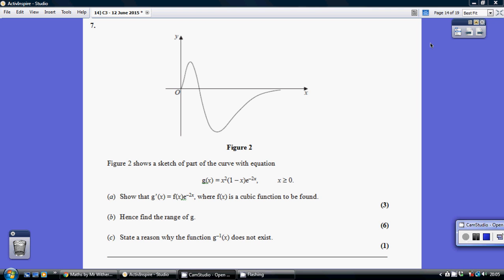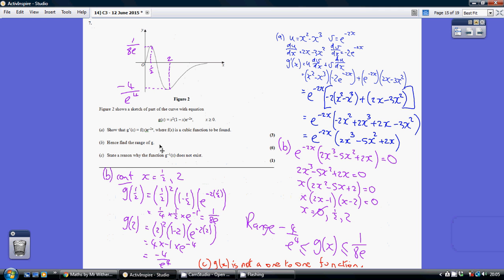Question 7. We need to differentiate this g(x) function, and we're going to use the product rule. Let's start by multiplying out x squared by the bracket (1 - x) to give us x squared minus x cubed.